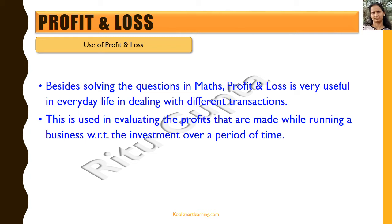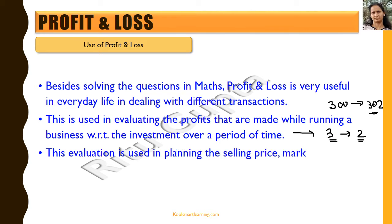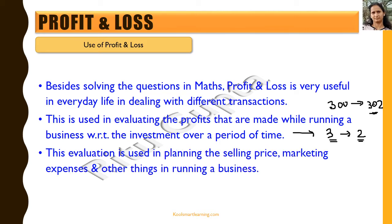Profit and loss is used for evaluating the profits made while running a business with respect to the investment over a period of time. For example, a 2-rupee profit on a 3-rupee investment is good. But if someone buys something for 300 rupees and makes only 2 rupees profit, selling it for 302 rupees, that is not a very good profit and may not be sustainable for running a business.